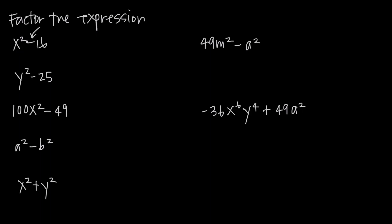In order to take the difference between two squares, we need one positive square — this is positive x squared — and one negative — this is negative 16. As long as we have two perfect squares and we have subtraction in the middle, factoring this expression is going to be really easy.